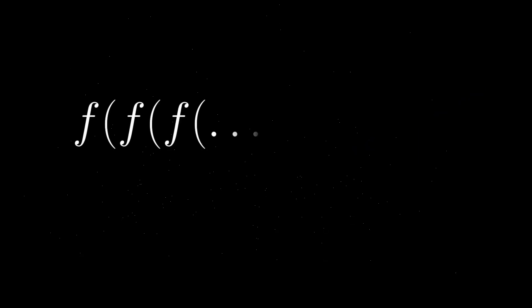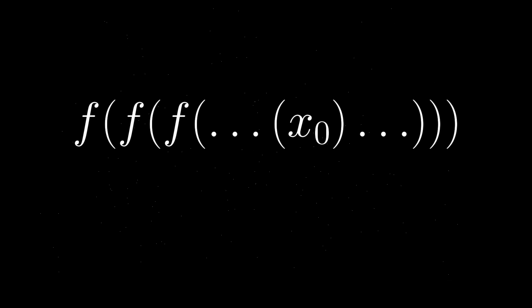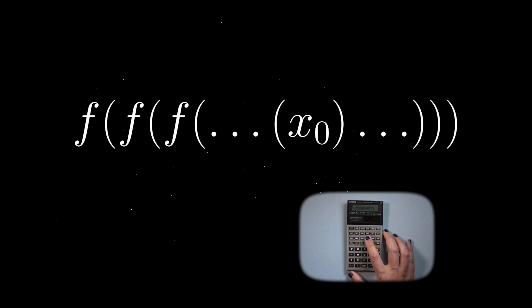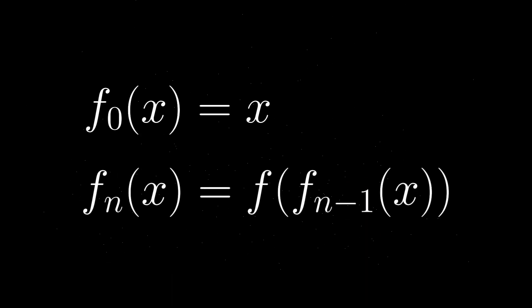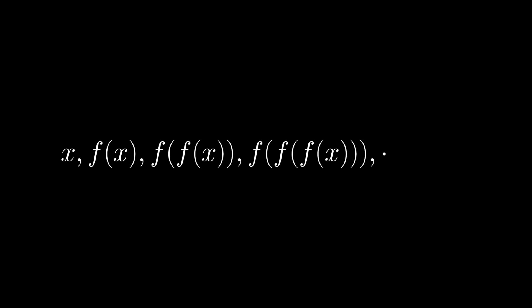Fixed-point iteration is a method of computing fixed points by repeatedly applying the function over and over again, much like repeatedly pressing the button on a calculator. Formally, we define a sequence where each value is the function mapped to the previous value. The resulting sequence may or may not converge, but when it does, it arrives at a fixed point.